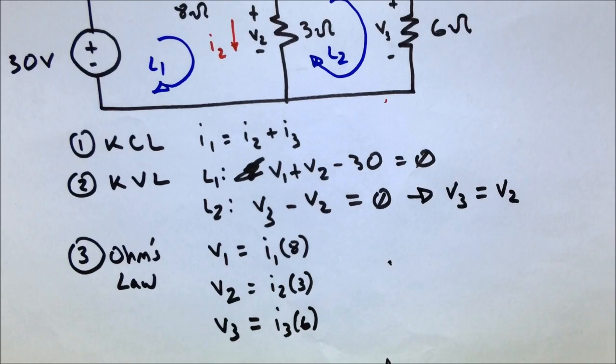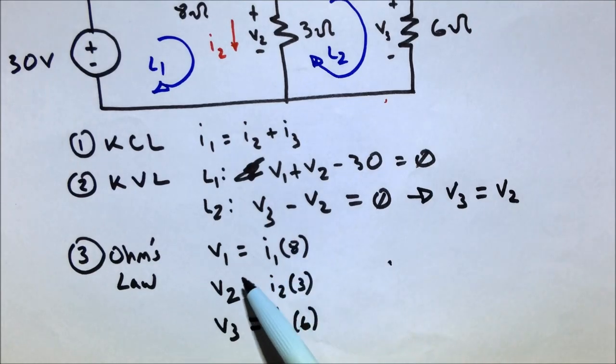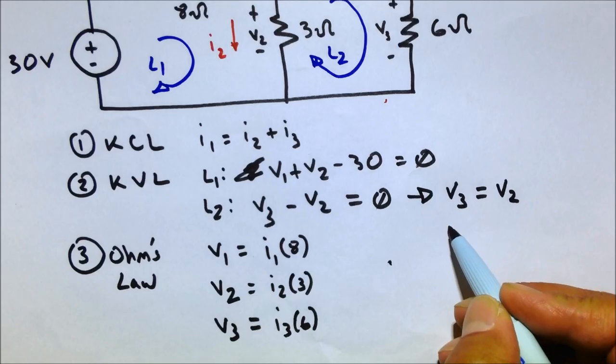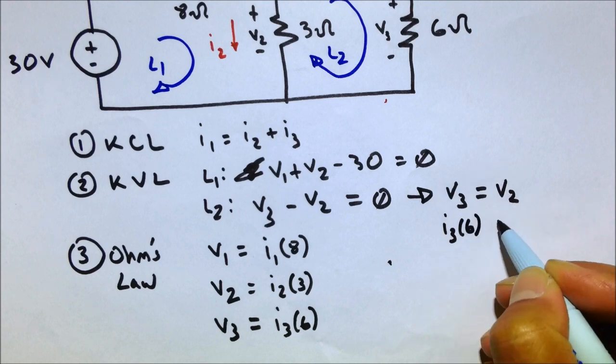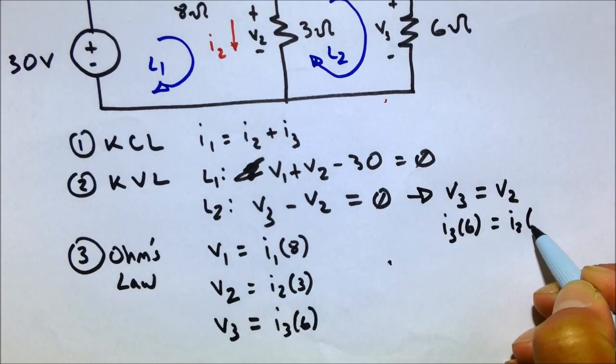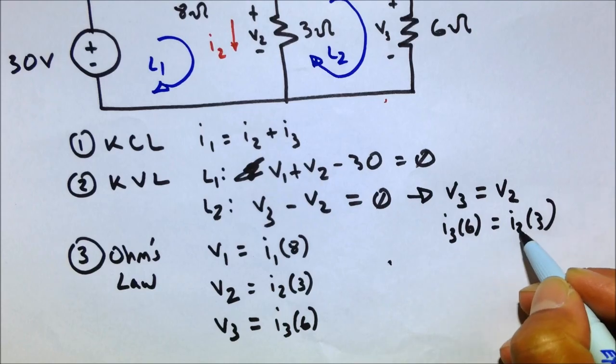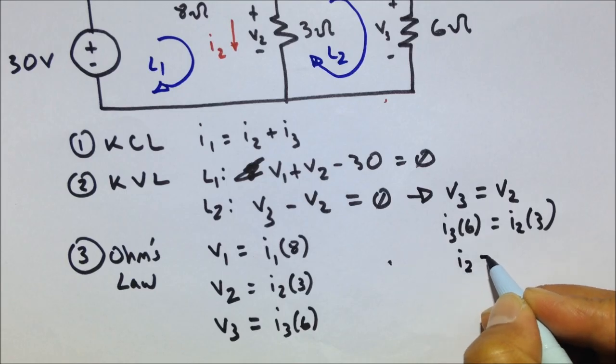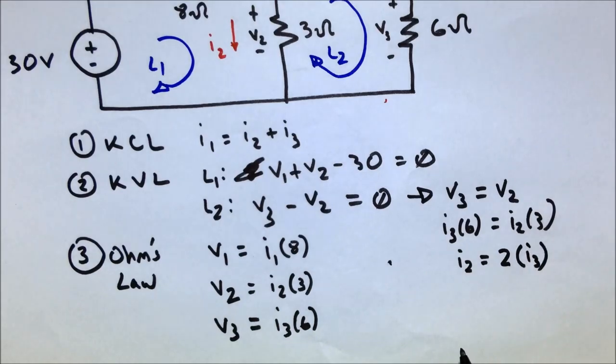Well, what else here? Well, if V3 equals V2, we can use Ohm's law in here maybe to get it into current. So V3 is I3 times 6 equals V2, which is I2 times 3. And we can solve for one of these guys. We can solve for, let's solve for I2. So I2 equals, and 6 divided by 3, so 2I3. Well that's another relationship we can use.